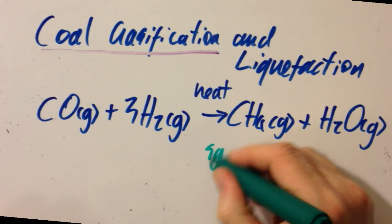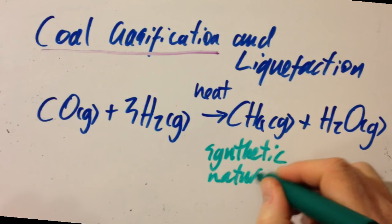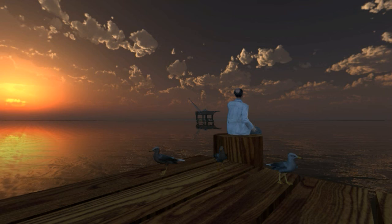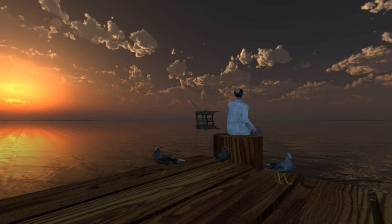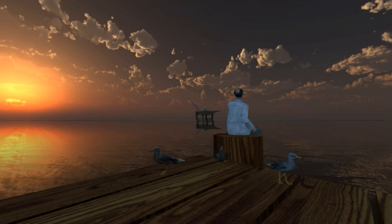And this is called synthetic natural gas. So synthetic natural gas comes from an industrial process, but natural gas comes from oil wells or from fracking.